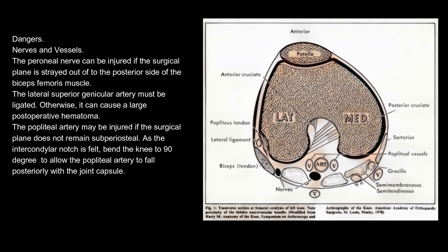Dangers — nerves and vessels: the peroneal nerve can be injured if the surgical plane strays to the posterior side of the biceps femoris muscle. The lateral superior genicular artery must be ligated, otherwise it can cause a large postoperative hematoma. The popliteal artery may be injured if the surgical plane does not remain subperiosteal as the intercondylar notch is felt; bend the knee to 90 degrees to allow the popliteal artery to fall posteriorly with the joint capsule.